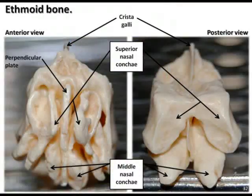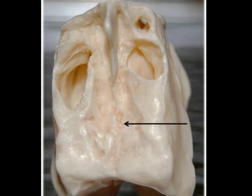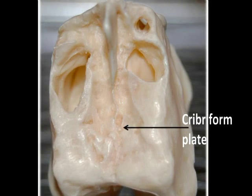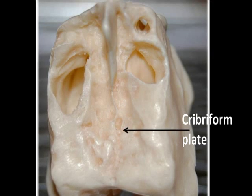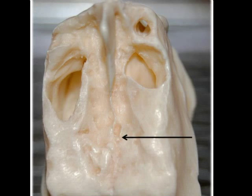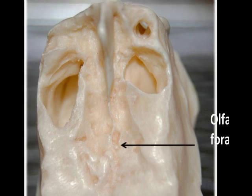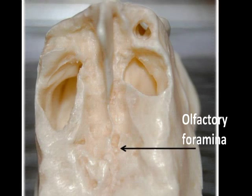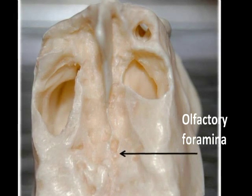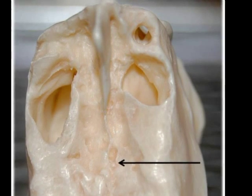Now let's take a look at the unique bony landmarks of the ethmoid bone. On the superior surface of the ethmoid bone is the cribriform plate. This porous, sieve-like, flat bone forms the roof of the nasal cavity, and its location is on the anterior floor of the cranium. The many perforations throughout the cribriform plate are the olfactory foramina, and these allow passage of the olfactory nerves, which contain receptors that are sensitive to chemical odor molecules.